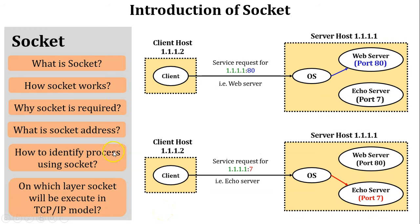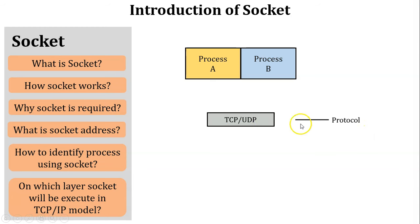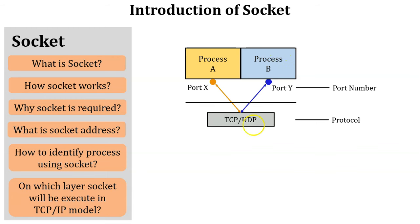Next, on which layer does a socket execute in the TCP/IP model? There are two processes, A and B, both running on the application layer of the TCP/IP model. Both processes want to communicate with other processes running on different machines in the network, so a socket is required. The next layer in the TCP/IP model is the transport layer, where TCP and UDP protocols are defined. Their purpose is process-to-process communication in the network.